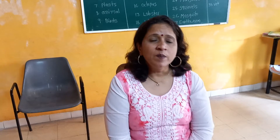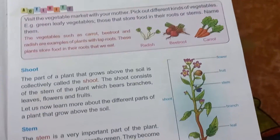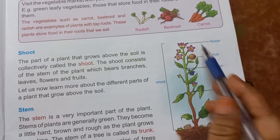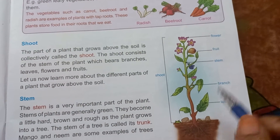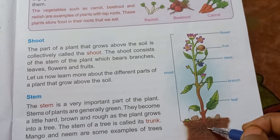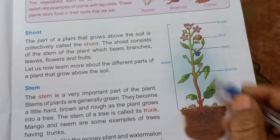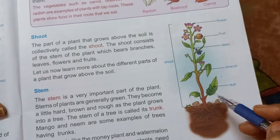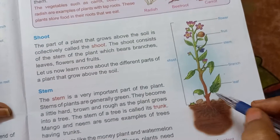Hello children, now we will take the next part of your science lesson: parts of a plant. Now look at the group. Here is the picture of the plant. These are the roots — these all are parts of a plant.